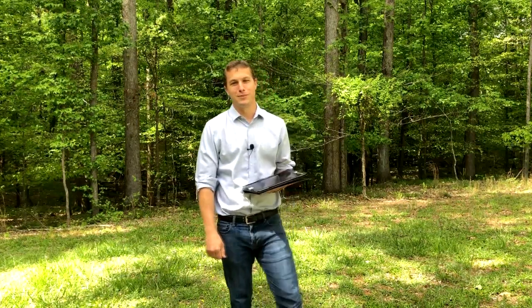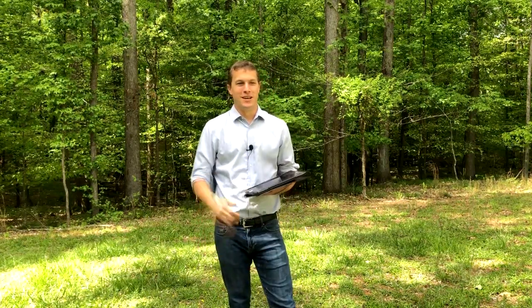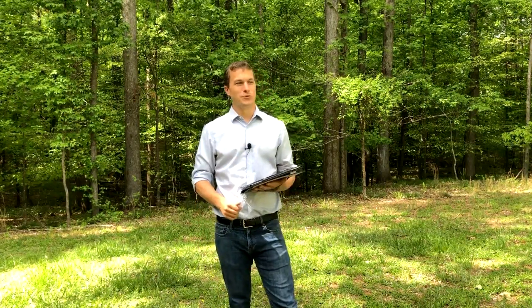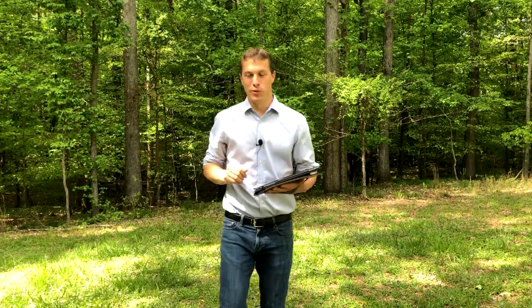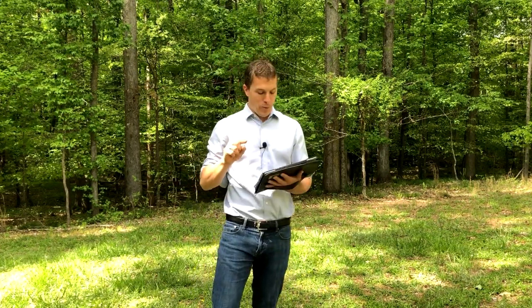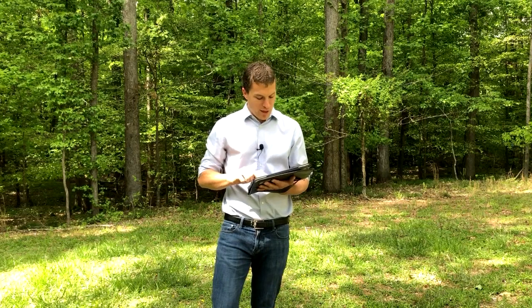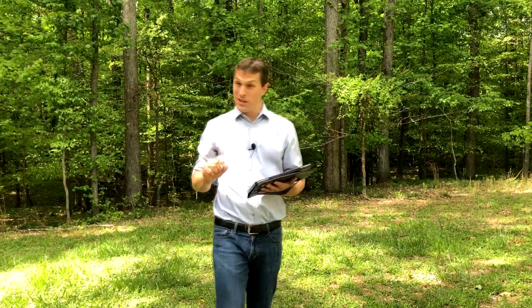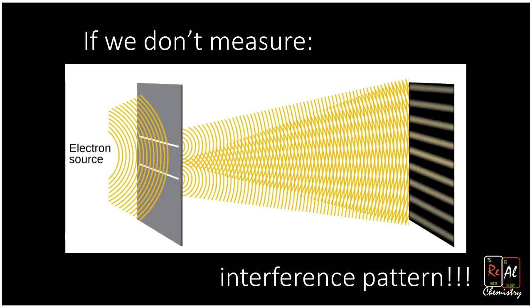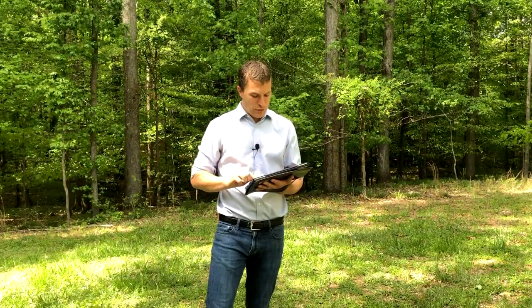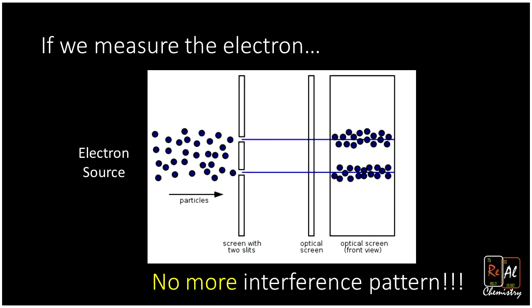Welcome again to Real Chemistry. I'm Dr. Morris. We're going to finish up a discussion we started on the two-slit experiment. When we discussed in a previous video the two-slit experiment, we saw that when you measured what an electron was doing, it changed its behavior. If you don't measure where the electron is when you send it through two slits, you get an interference pattern. On the other hand, if you do measure it, suddenly we don't get an interference pattern and our electron behaves like a particle.